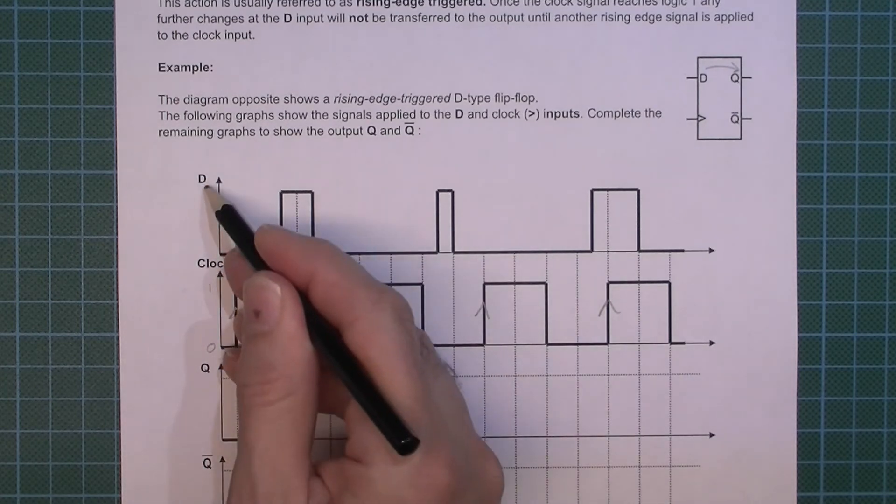Now at this first rising edge, that point, so D, remember this is D, that D is actually a logic low zero. The next rising edge, this point here, that's also a logic zero. So remember, each time we have a rising edge, this D will be transferred to Q.